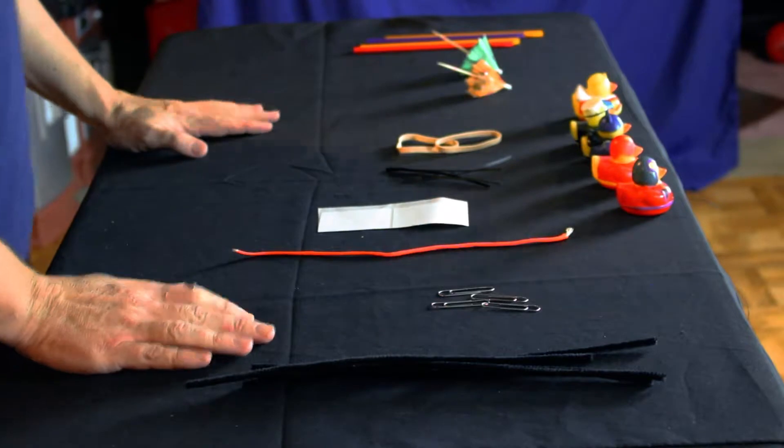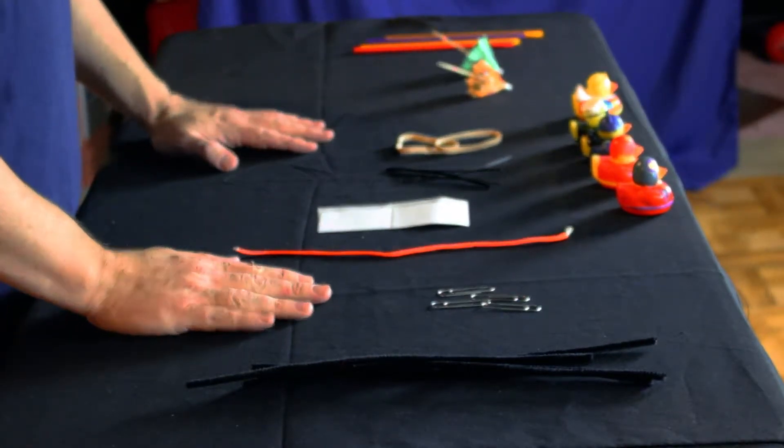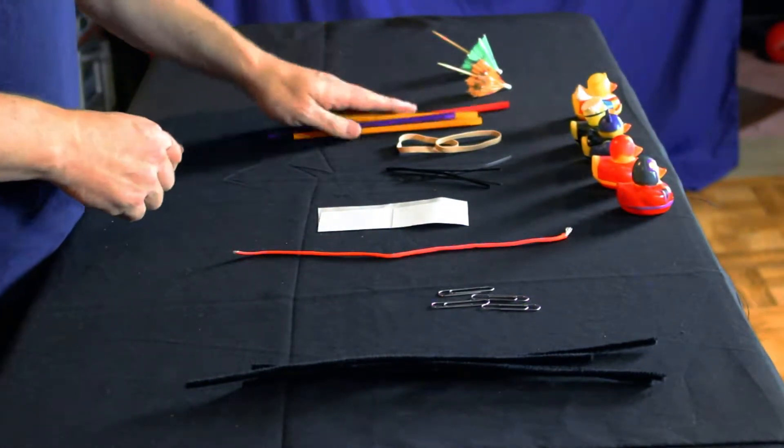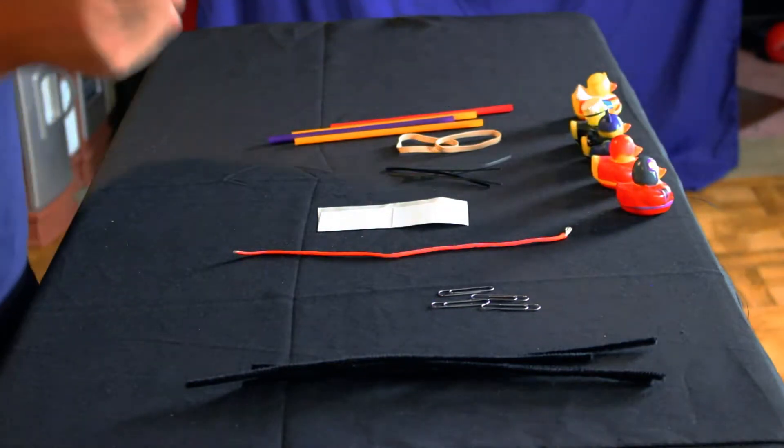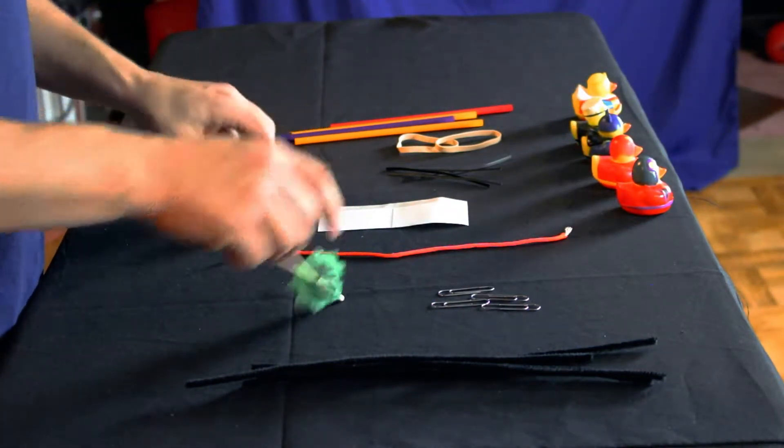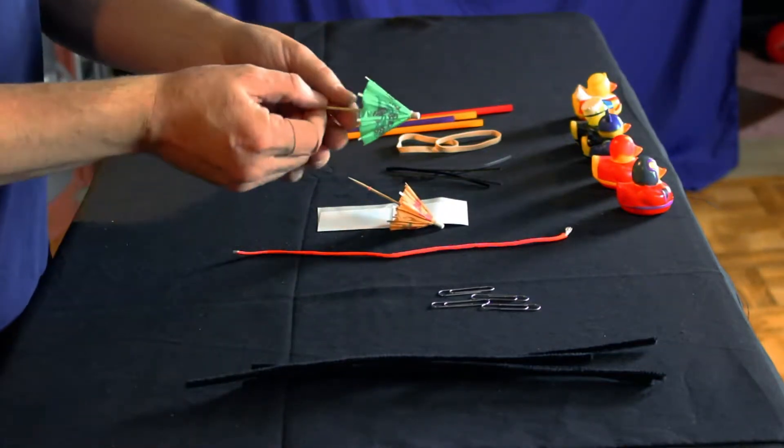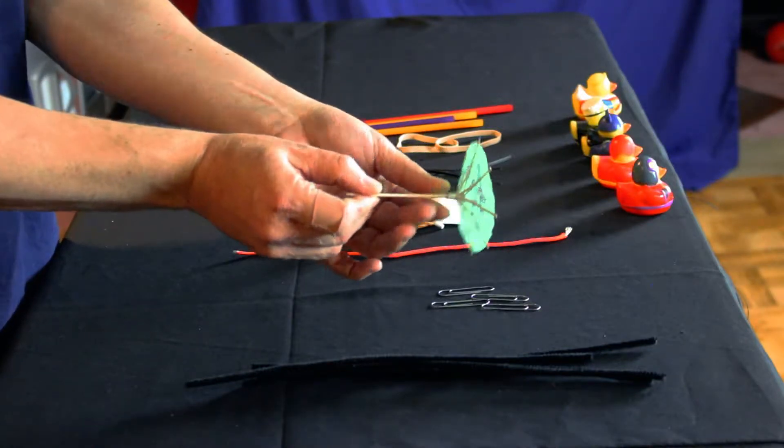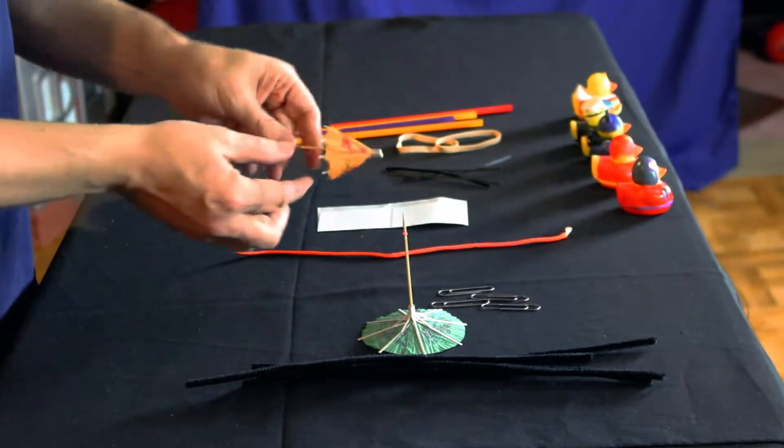First thing we need to do is figure out what's going to be the base of our structure. We need something that can stand. Luckily, we have these two umbrellas. They don't stand up like this, but if you push the cocktail umbrella in right here, push it all the way through, look what it does. Creates a nice standing structure.